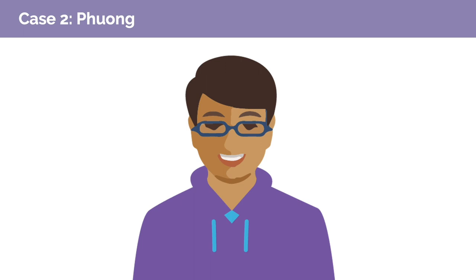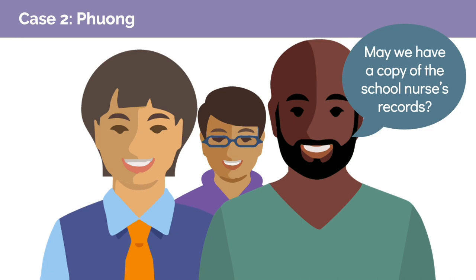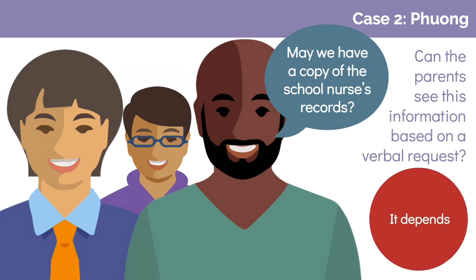Fuang, age 16, is sent to a school nurse after he passes out in class. The school nurse does a physical exam. Fuang shares that he has been using substances every day to address anxiety and stress he feels at school. The school nurse documents everything in the education file. Fuang's parents call the school the next day to ask for a copy of the school nurse's records. Can the parents see this information based on a verbal request? It depends. Generally, a parent has the right to review their minor child's education record and does not need to provide written consent. However, if a school believes that disclosing records may put a child in danger, or believes that this parent does not have custody of the student, the school should contact legal counsel for advice on how to proceed.